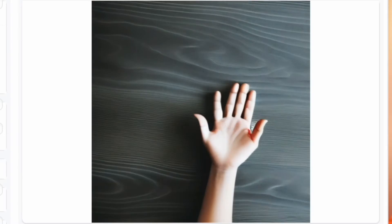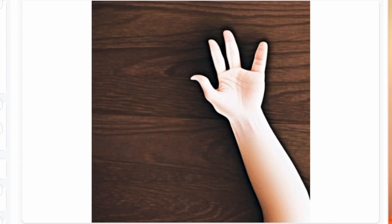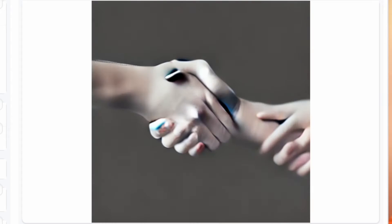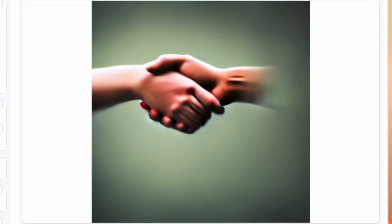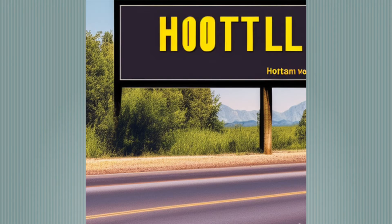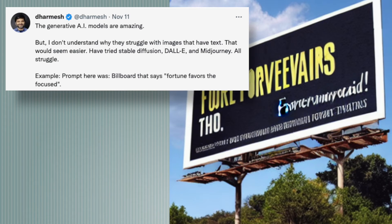Since it's so early, there are some weird image generation issues. It's not particularly good at generating hands — human hands seem to be a real issue for Stable Diffusion. It also has a lot of issues with text, so anything that has text in it sometimes doesn't turn out correctly.